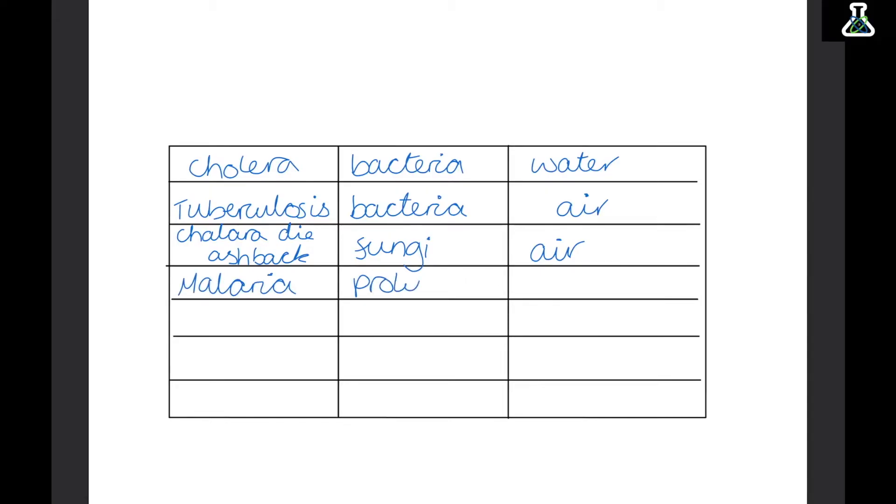Malaria is caused by a protist and this is spread by vectors. So this means something that has the disease and spreads it onto something else. So malaria is mainly caused by mosquitoes. So the mosquito is the vector. Helicobacter is spread by bacteria and this is mainly spread through touch. And then HIV is a virus, which is spread through bodily fluids. And then chlamydia is spread by bacteria, which is mainly spread through sexual contact.